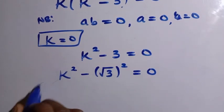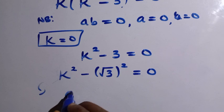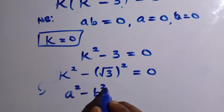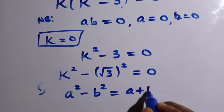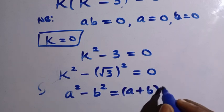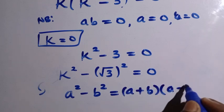And from this expression suppose we have A squared minus B squared, so this equals A plus B multiplied by A minus B.